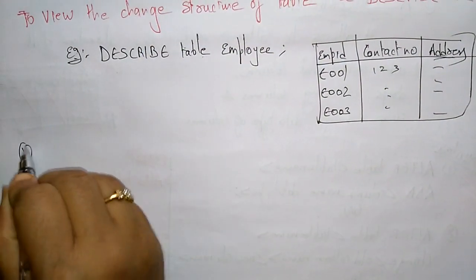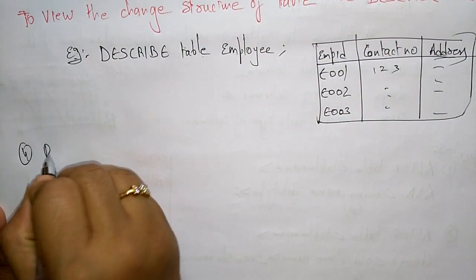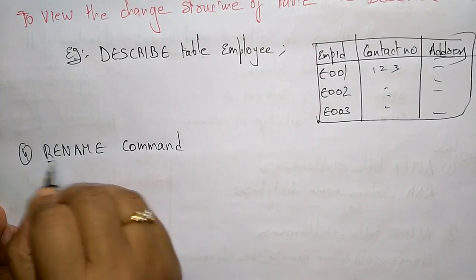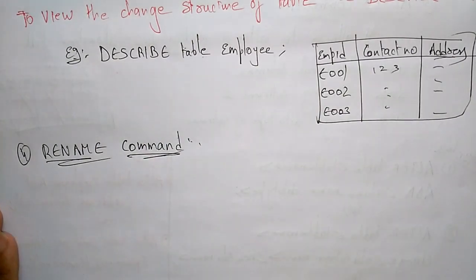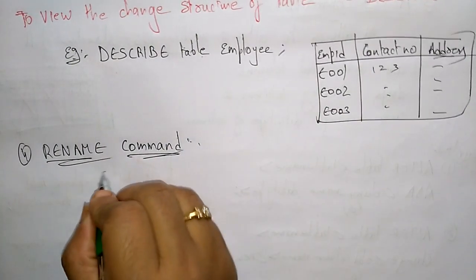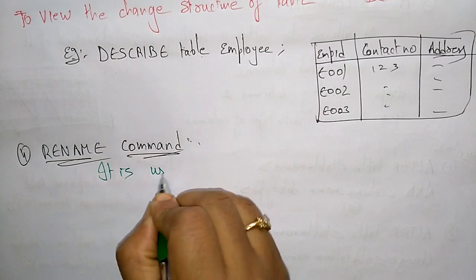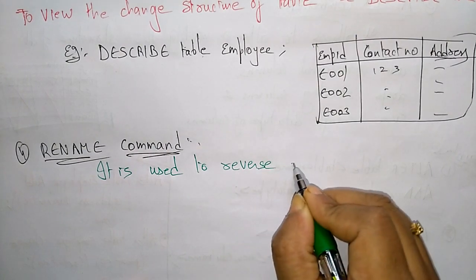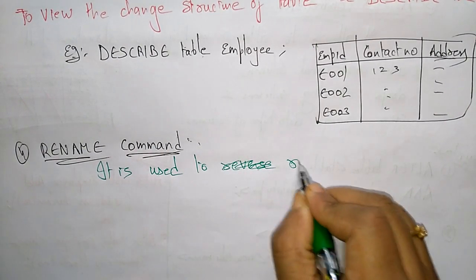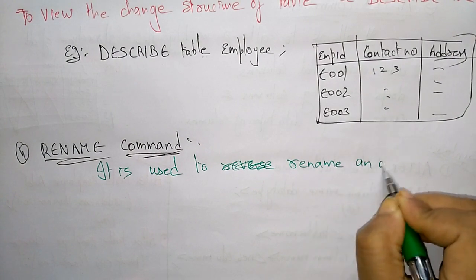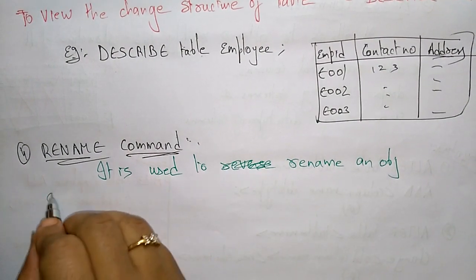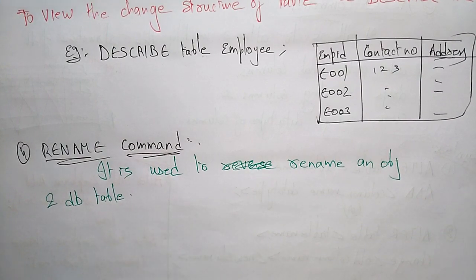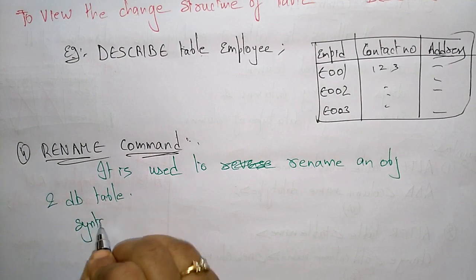Now coming to the next command — the fourth one is the RENAME command. The RENAME command, as the name itself says, is used to rename an object and database table. The syntax is: RENAME TABLE old_name TO new_name, followed by a semicolon.